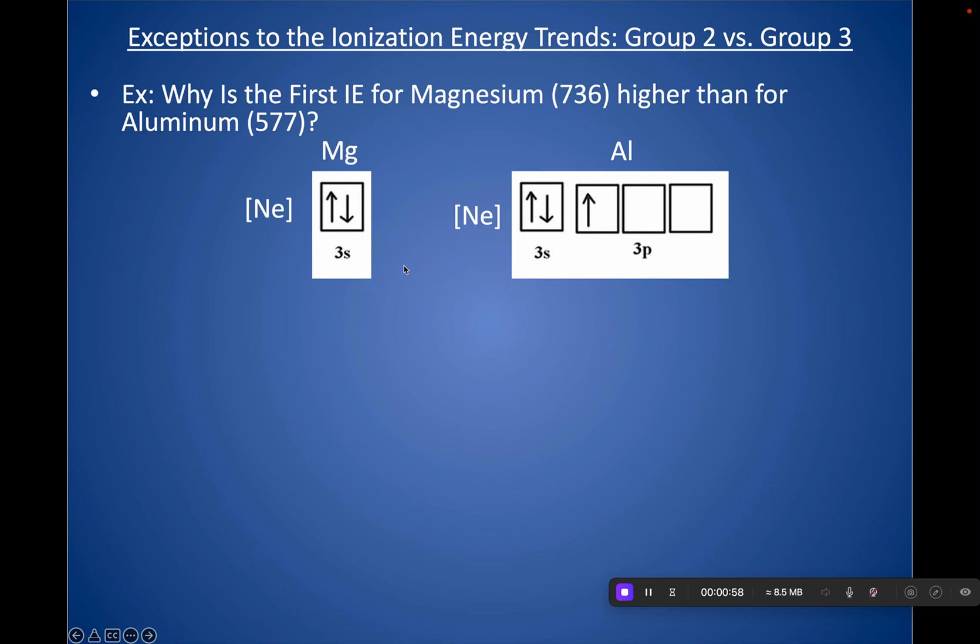You're going to see this dip happen every time you go from Group 2 to 13, or 2A to 3A—there is a dip in ionization because you are now removing a p versus an s electron. So it is a p versus s argument. You can make it as a distance argument—some people like to say p is further from the nucleus than s. In actuality, it's a penetration argument. The p does not penetrate the nucleus as well as s, so the s can penetrate and get closer to the nucleus than p can. Therefore, it is easier to remove p than s.